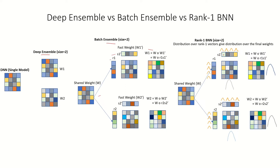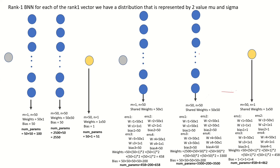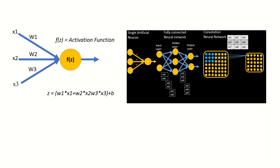So when I say distribution, instead of one value for each weight we are going to have two values: one for the mean and one for the standard deviation. In this video, we are going to take whatever theoretical understanding of weight matrices we have and implement it mathematically, compute the parameters for each layer with different ensemble methods, and then implement the same in code using Keras and verify that the parameter counts match.